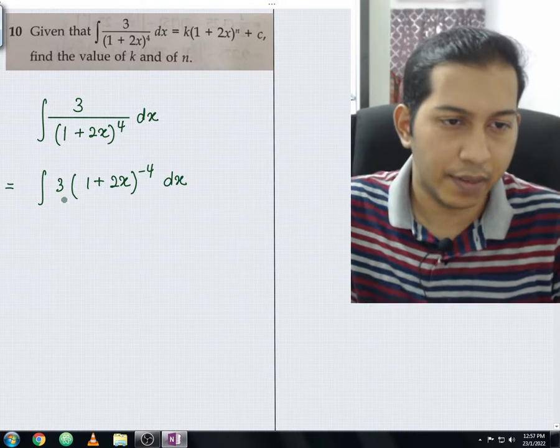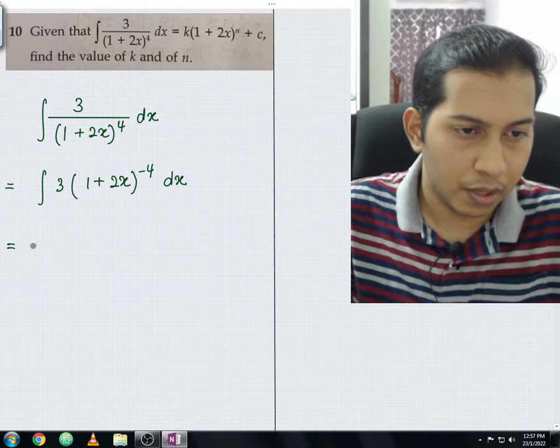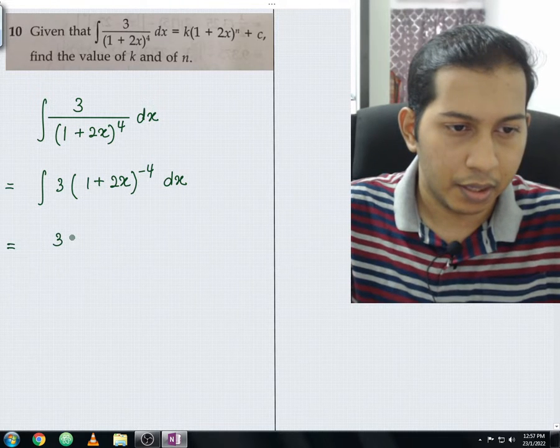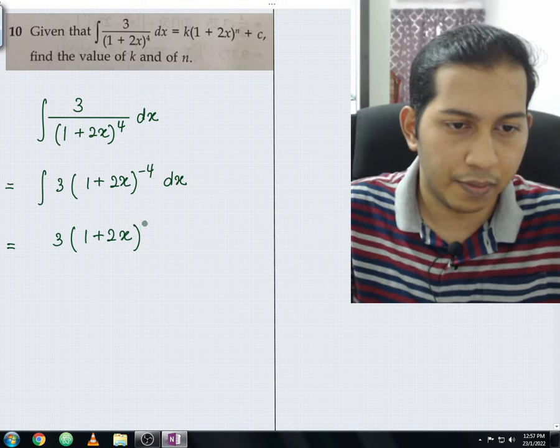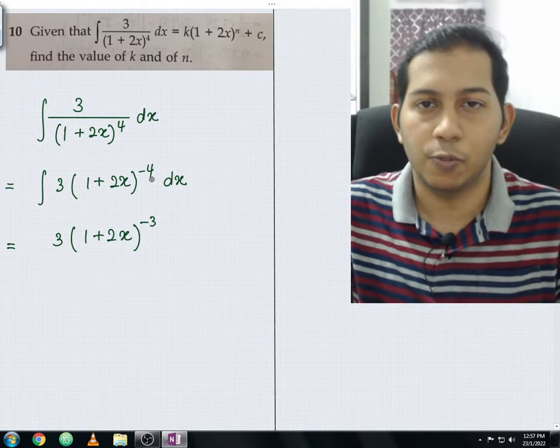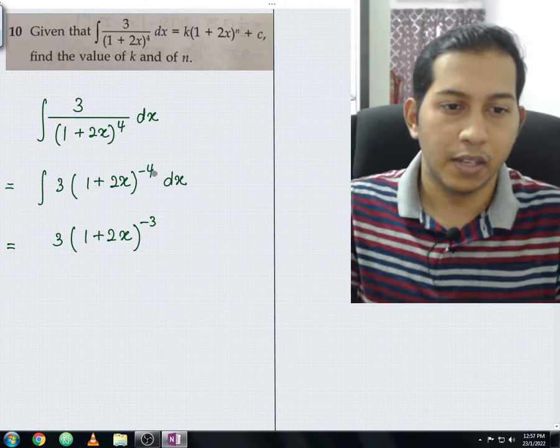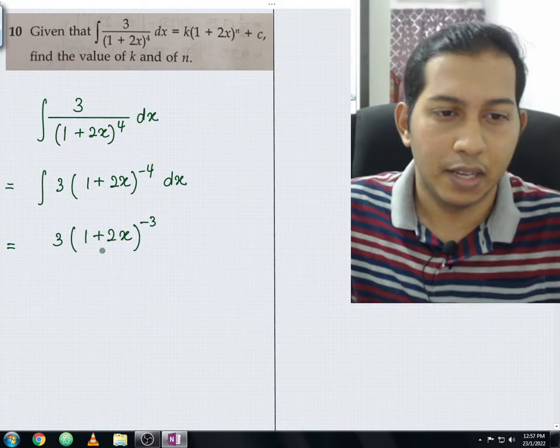Let us perform the integration for this expression. So you integrate this, you should be getting 3(1+2x) to the power of negative 3. So how you get this negative 3 - negative 4 plus 1, the index you plus with 1. So this negative 3, you also divide with negative 3 as well.